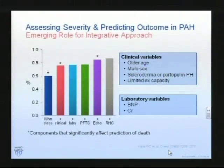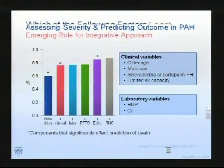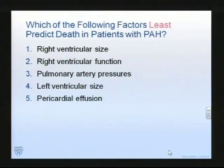Of the clinical variables, scleroderma-related portal pulmonary hypertension tends to have generally a worse prognosis for a number of different reasons. Male sex, older age, and limited exercise capacity also have significant impact. Of the laboratory values, underperfused kidneys and overdistended hearts indicate a later stage of disease. As far as factors least likely to predict death in patients with pulmonary hypertension, which of the following: right ventricular size, right ventricular function, pulmonary artery pressure, left ventricular size, or pericardial effusion?